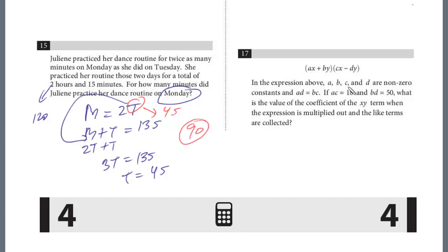17. In the expression above, A, B, C, and D are non-zero constants, and AD equals BC. If AC equals 18 and BD equals 15, what is the value of the coefficient of the XY term when the expression is multiplied out and the like terms are collected?